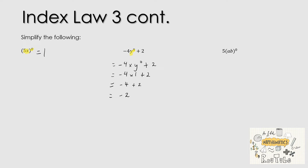The last one: we've got 5 and in brackets (AB) to the power of 0. Because there's a bracket, the 0 belongs to the A and the B, so the whole bracket equals 1. That 0 does not belong to the 5. Writing it out: 5 multiplied by (AB) to the power of 0. We know anything to the power of 0 equals 1, so 5 times 1 equals 5.